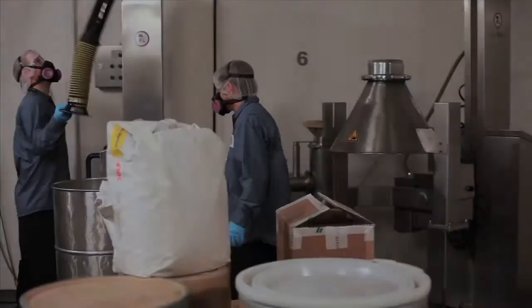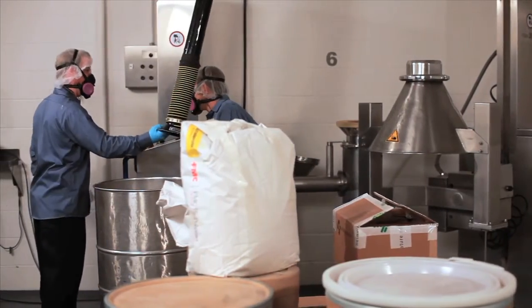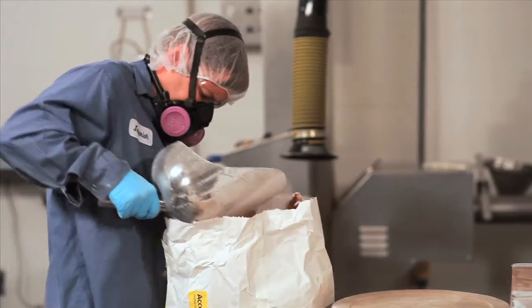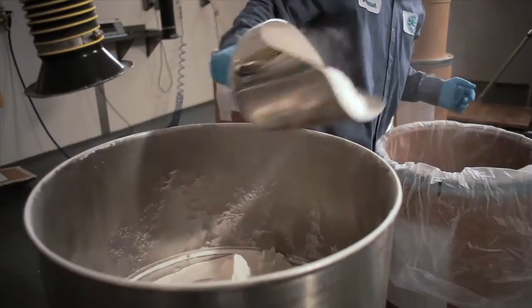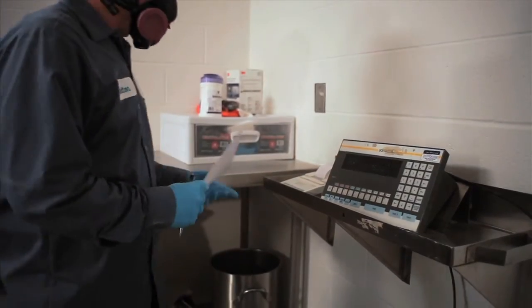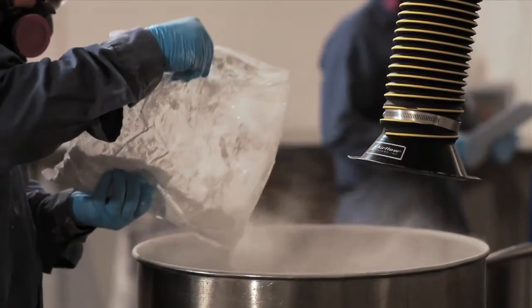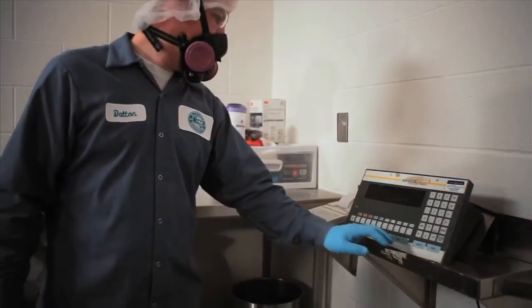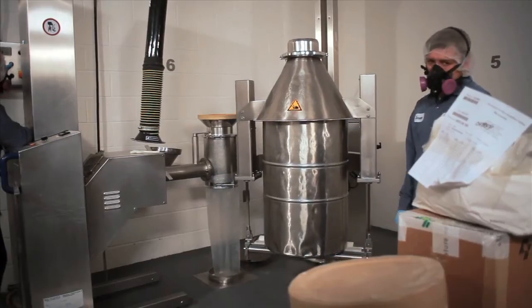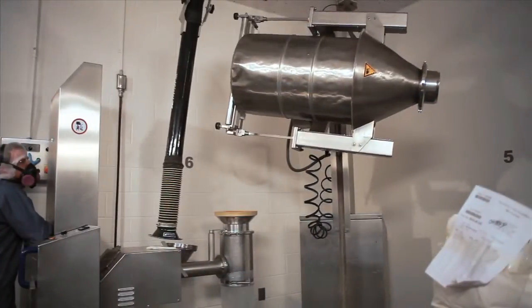Now that we've seen how Synergy products are formulated and tested, let's take a look at how they are made. The issuing room is where it begins—a measuring room where the strict recipe developed in our pilot lab is followed and produced on a large scale. Every formula is carefully measured and weighed to the milligram. Once a batch is done, it's sent downstairs to be mixed.